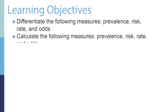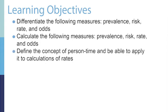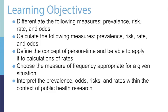You'll also learn how to calculate each of these measures — prevalence, risks, rates, and odds. Then you'll also learn how to define the concept of person time and be able to apply it to calculations of rates. You'll also be able to choose the measure of frequency most appropriate for a given situation, and interpret prevalence, odds, risks, and rates within the context of public health research.